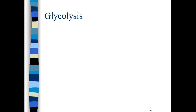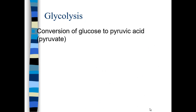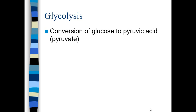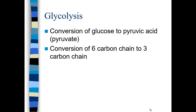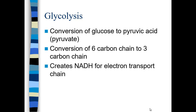Breaking down glycolysis: it's the conversion of one glucose molecule to two pyruvic acid molecules, going from a six-carbon chain to two three-carbon chains. It creates NADH — which, once converted from NAD+, contains electrons and hydrogen — and you get a net gain of two ATPs. You actually get four ATPs, but it takes two to prime the process, so the net gain is only two.